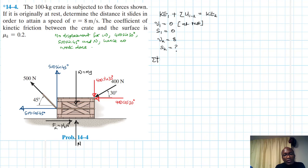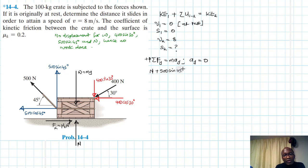Let's start by finding the normal force. Summation of forces in the y-direction equals m·ay, and since there is no acceleration in the y-direction this equals zero. So we have: N plus 500 sin 45 minus W (which is mg) minus 400 sin 30 equals zero.